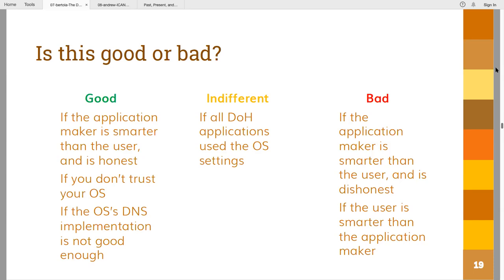It's also good if you don't trust your operating system's implementation, which is currently used to send your queries. And it's a positive use case for DOH that some JavaScript applications cannot access all DNS query types — by giving them direct access to DNS, they can do more. There is a middle ground: if DOH applications use by default the resolver configured in the operating system, this is sort of neutralized, because all applications would still use the same resolver the user configured. But there are still many situations where introducing this DNS differentiation at the application level is really problematic.